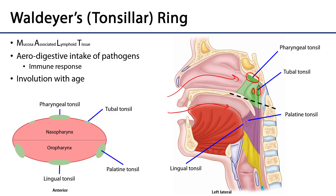Within the oropharynx there is a set of palatine tonsils that sit within the tonsillar fossae — the region of the oropharynx called the throat. These palatine tonsils can sometimes be quite large and can even project out into the oropharynx. When they become inflamed during tonsillitis, they can be quite painful to any materials that pass over them and can even occlude part of the airway.